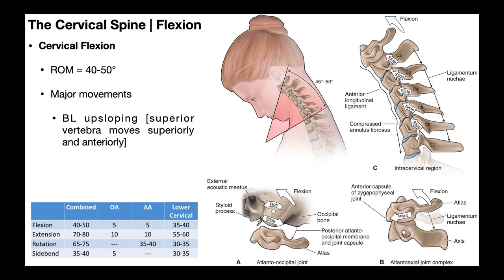In this video, we're going to be discussing the biomechanics of cervical flexion and extension. We're going to begin by talking about cervical flexion, which is exactly what you see here in this picture. This individual is bending their neck forward as if to nod their head yes. So that's cervical flexion. Now, there are several important things that happen anatomically during cervical flexion, and that's what we're going to talk about first.